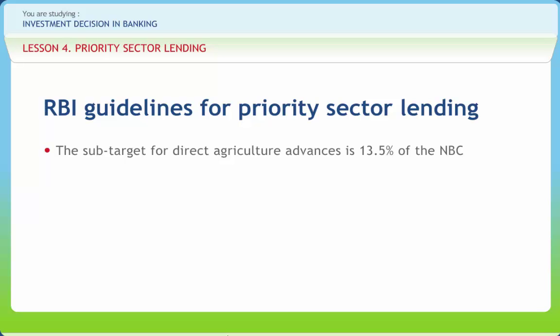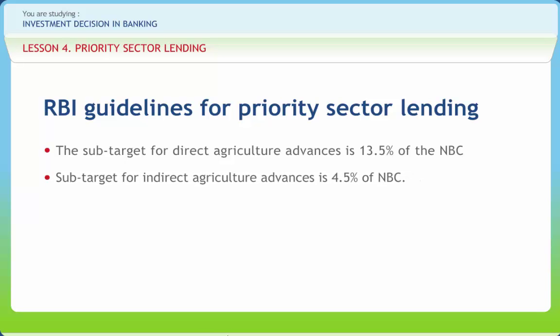Indirect finance denotes finance provided by banks to farmers indirectly, i.e., through other agencies. The sub-target for indirect agriculture advances is 4.5% of NBC.